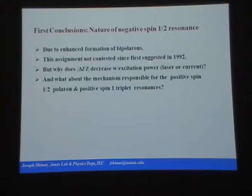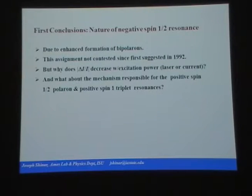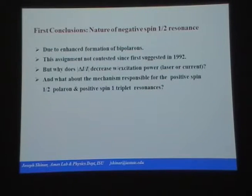This negative spin-1/2 resonance is due to enhanced formation of bipolarons. Why is that spin-dependent? Because a bipolaron — a doubly charged positive dication or dianion — is spinless. So if you take two polarons and induce them to form a bipolaron, they have to be in a singlet pair configuration. That's a spin-dependent process. We believe we were seeing effects of enhanced formation of bipolarons — not contested since first suggested in 1992.